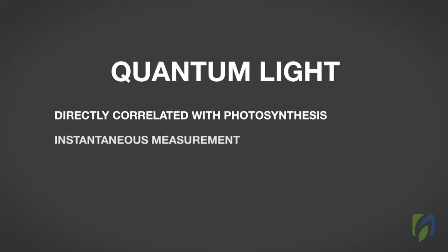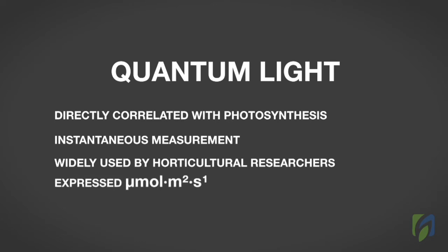Quantum light is also an instantaneous measurement. Quantum light is widely used by horticultural researchers and is expressed in micromoles per square meter per second. This type of light quantifies the number of photons that are used for photosynthesis falling in a square meter per second.